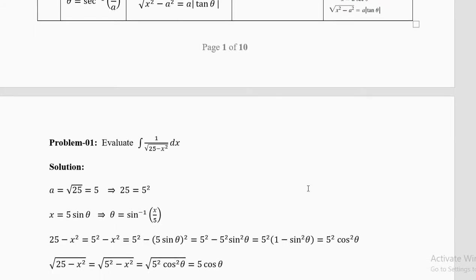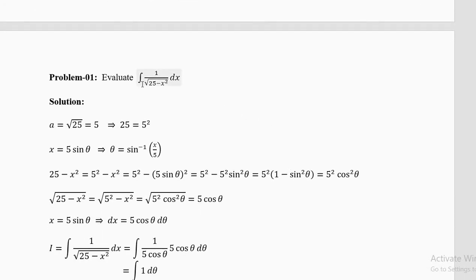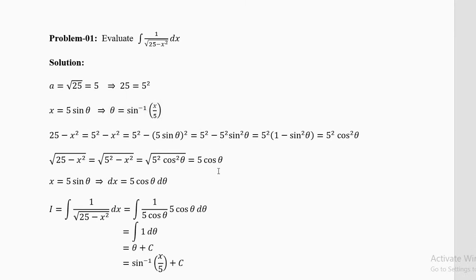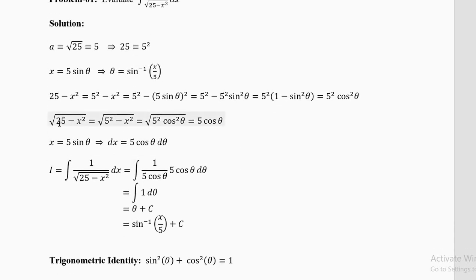First example: evaluate ∫1/√(25 − x²) dx. Here a = √25 = 5, so 25 = 5². Put x = 5 sinθ; then θ = sin⁻¹(x/5). Now 25 − x² = 5² − (5 sinθ)² = 25(1 − sin²θ) = 25 cos²θ, so √(25 − x²) = 5 cosθ.